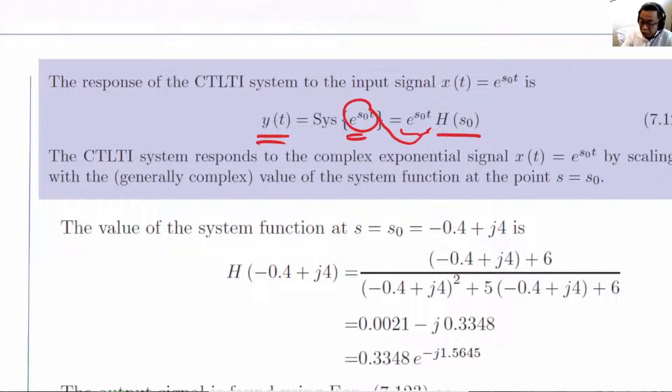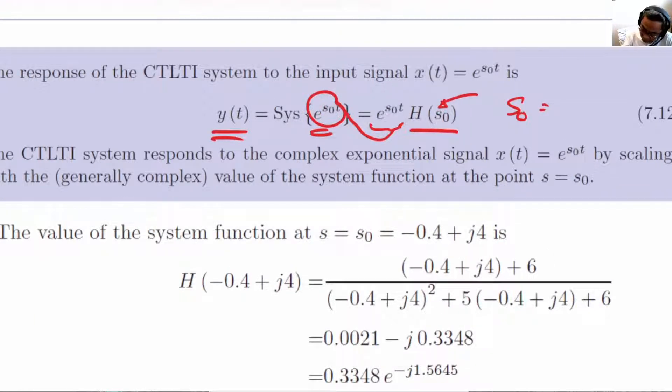Where s₀ in this case is the s₀ in the expression over here, which is minus 0.4 plus j4.